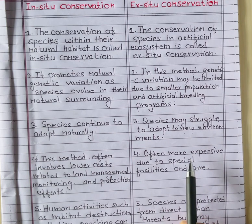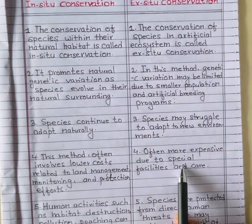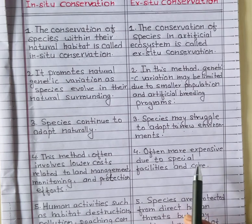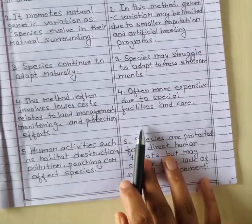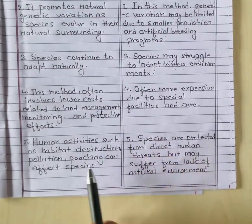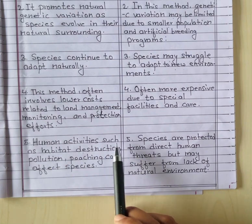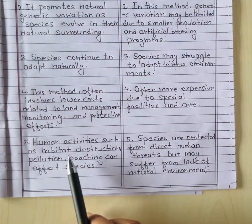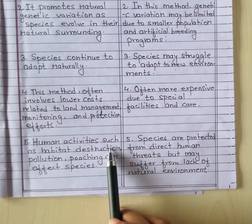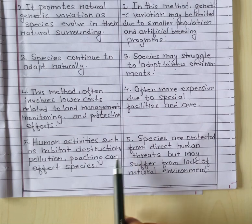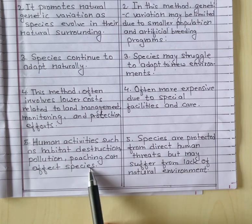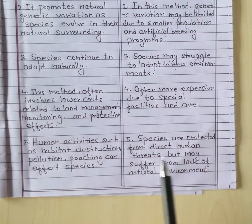So, ex-situ conservation is more expensive than in-situ conservation. Fifth point: human activities such as habitat destruction, pollution, and poaching can affect species in in-situ conservation.